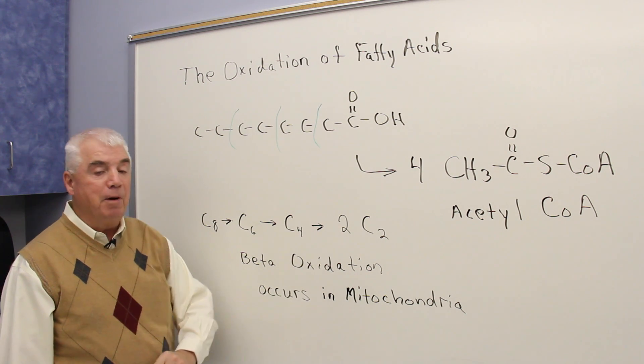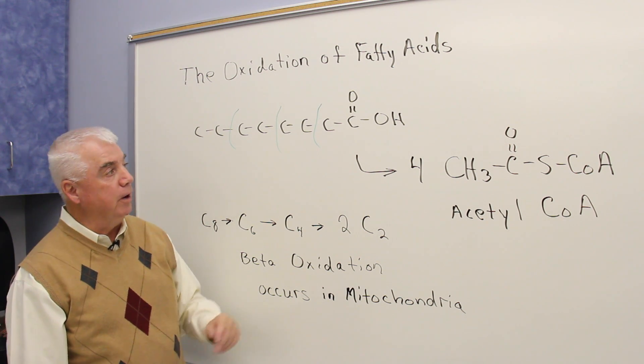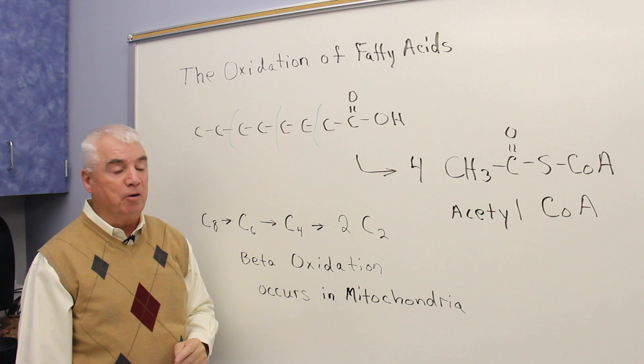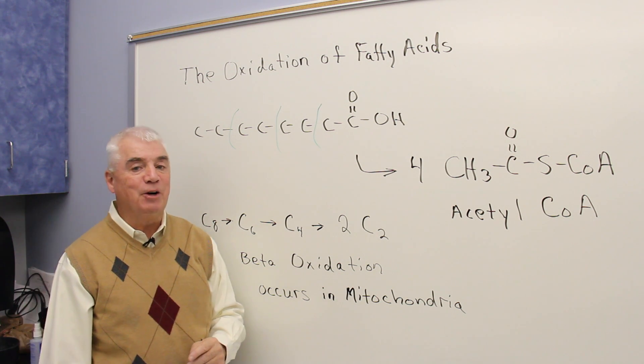It occurs in the mitochondria. But before the fatty acid can get into the mitochondria, this carboxylic acid group has to be modified a little bit in what we call an activation step. Let's have a look at that.